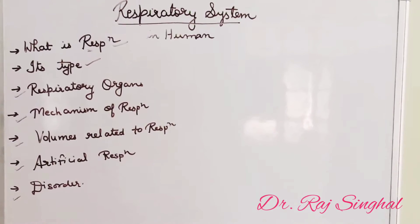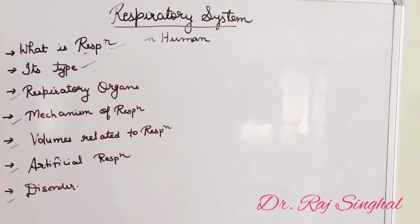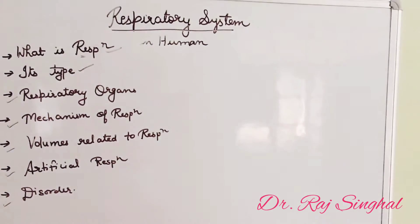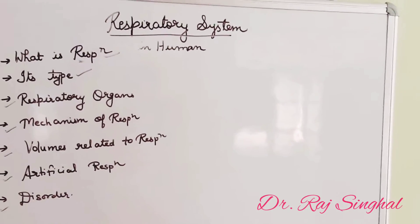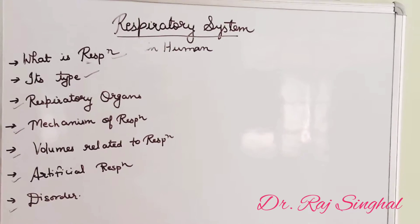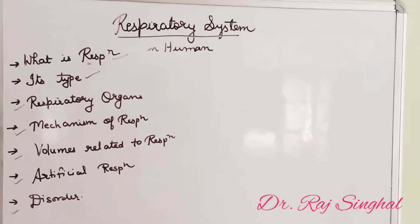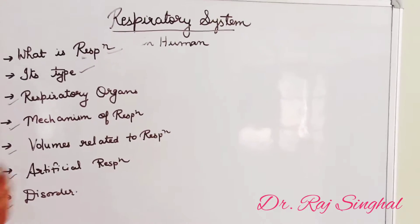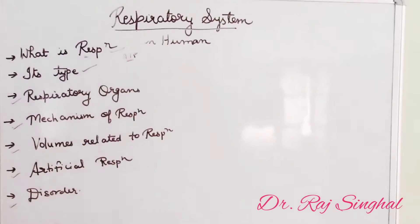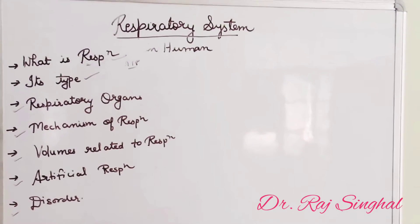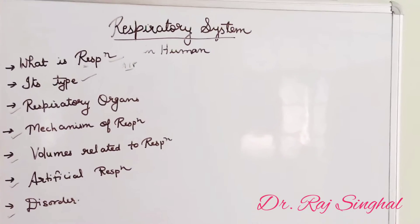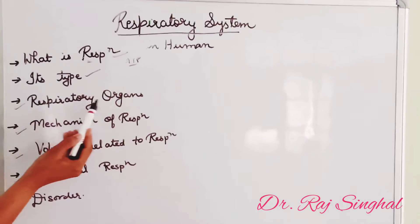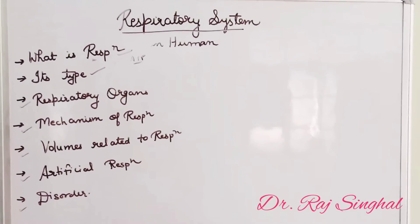Respiration is a catabolic process or a biochemical activity in which energy, water, and carbon dioxide are obtained due to oxidation of food present in the living cell. This energy is stored in the form of ATP. ATP is the energy currency of the cell. In this chapter, we will be studying about its types and the respiratory organs which help in respiration.